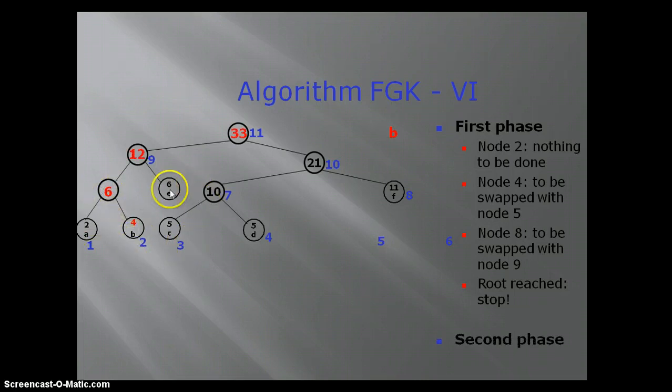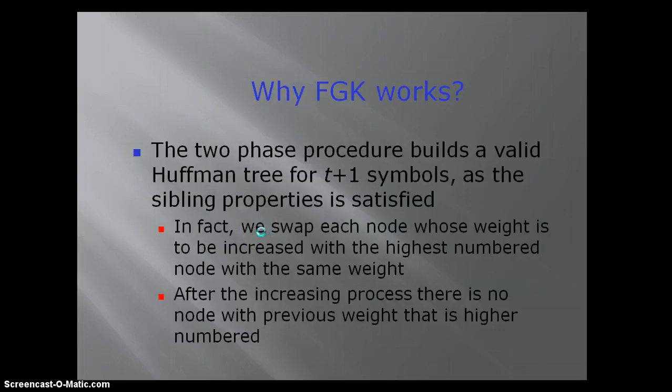The two-phase procedure builds a valid Huffman tree for t+1 symbols as the sibling property is also satisfied. Basically, we have swapped some siblings to maintain sibling property. We have swapped some tree to other subtree so that sibling property may be satisfied.